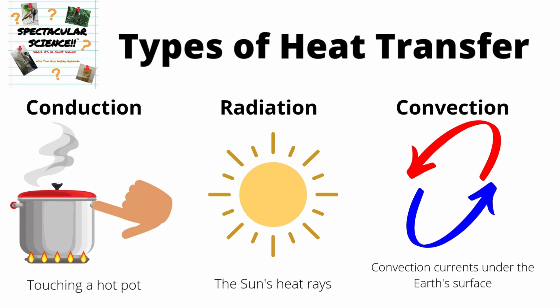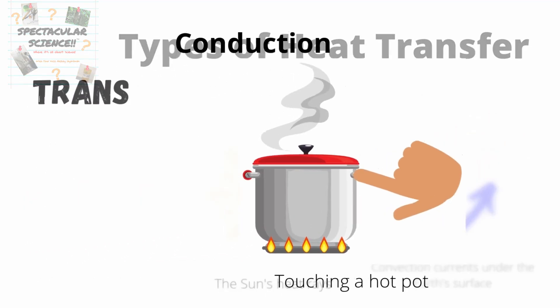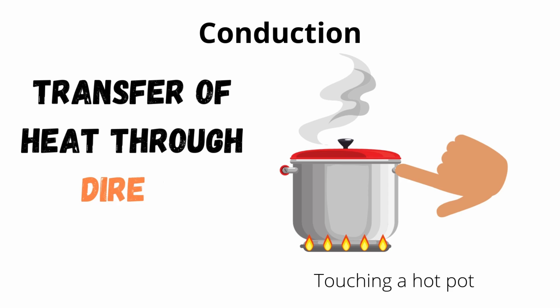Let's break it down bit by bit. The three different types of heat transfer are conduction, radiation, and convection. Let's look at conduction first. Conduction is a type of heat transfer that involves direct contact. An example is you touching a hot pot or even a hot mug, or physically touching something that is hot, and heat moves from the hotter thing to the colder thing. Remember, heat is a type of energy — it's how fast the molecules and atoms inside are moving. That's what causes heat, and that's what we are able to feel as something that's hot. So this direct contact, or actually touching something, is known as conduction.